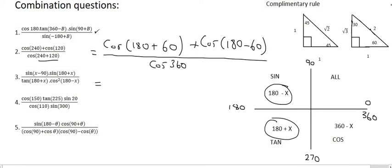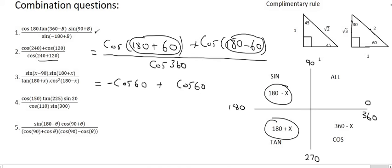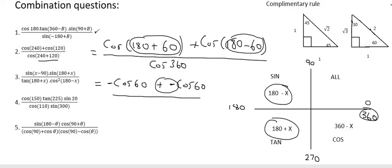Moving on to the next step: because this is on the CAST diagram, cos(180+60) simplifies to cos 60, but cos is negative in that quadrant so we put a minus. Then plus cos(180−60) also simplifies to cos 60, but cos is negative in quadrant two so another minus. And then cos 360 — that's a boundary point — type it in on the calculator and you get 1.